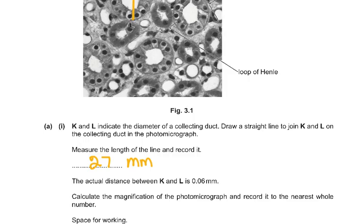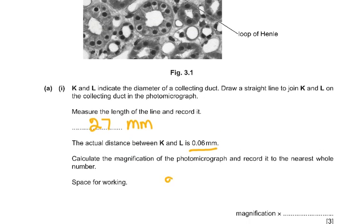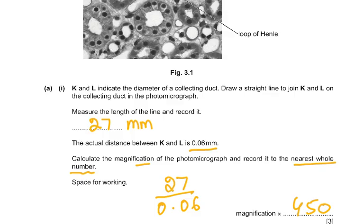The actual distance between K and L is 0.06 millimeters, but the measured length on the photomicrograph is 27 millimeters. To calculate the magnification: 27 divided by 0.06 equals 450 times. You calculate the magnification and record it to the nearest whole number. The answer is 450 times and it comes out as a whole number.